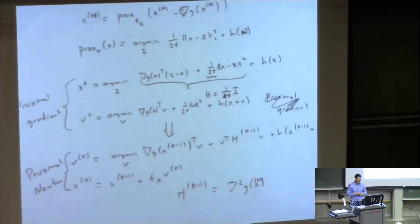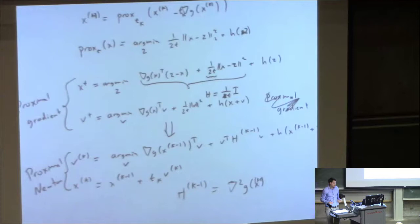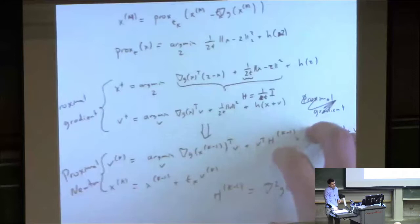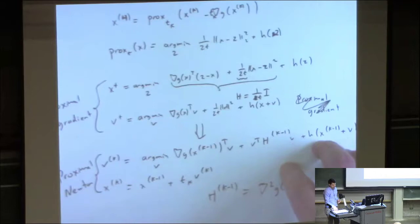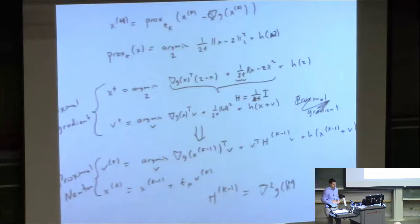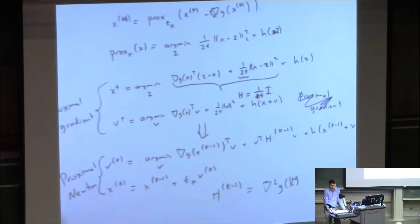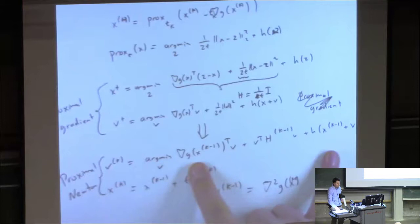What does this method do? If you can solve it, you get the nice properties of Newton's method — quadratic convergence — even with a non-smooth part of your function. But unlike proximal gradient, solving this inner problem can be quite hard in many cases. It doesn't have a simple closed form like the normal proximal gradient term. So the method can be state-of-the-art for many problems, but only if you have a special method for solving this inner subproblem.